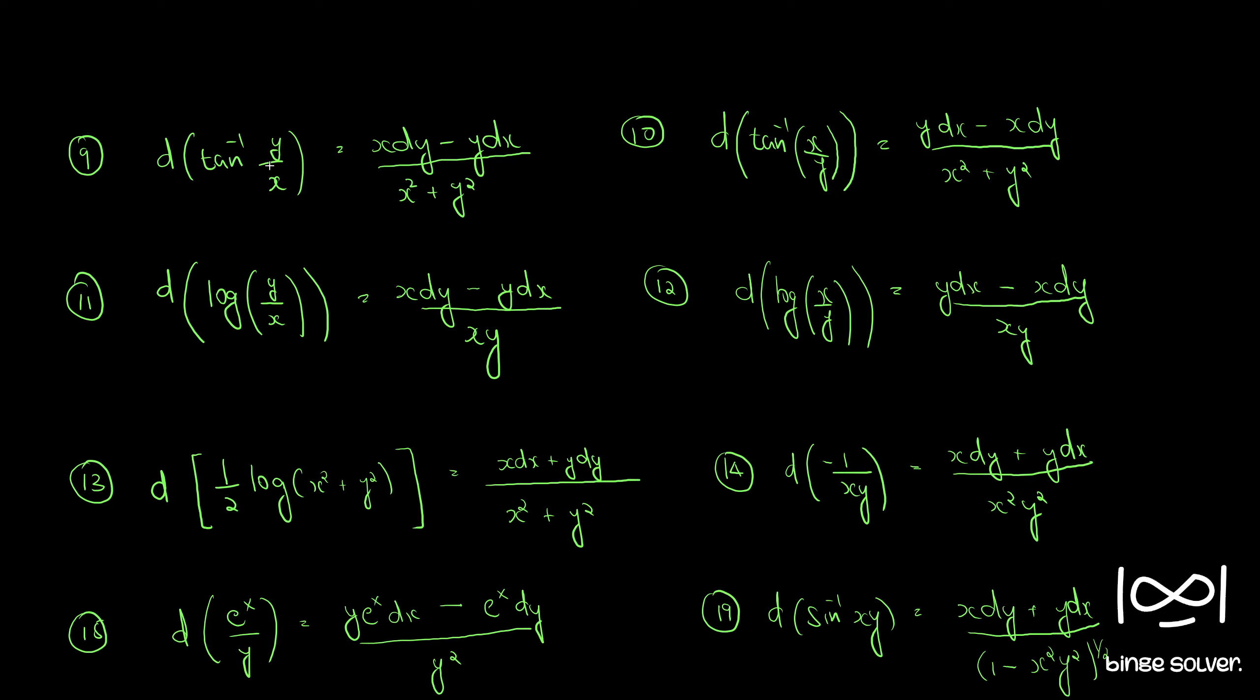Just suppose there are 19 forms given in this list. Go through it and try to familiarize the patterns. If the denominator has xy, there will be a log; if the denominator has x squared plus y squared, there will be tan inverse; if there is y dx minus x dy, there is a chance that the function will have x by y.